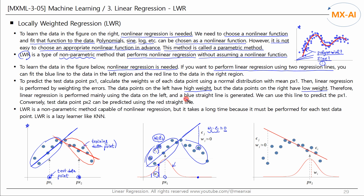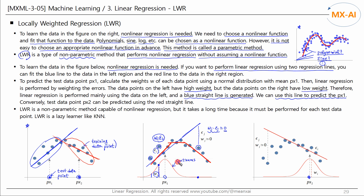This results in a blue regression line. We can use this blue line to predict the target value for px1. Conversely, the test data point px2 can be predicted by the red regression line. If we use three regression lines, the result would be like this. Since the normal distribution is a continuous function, a smooth curve like this is created as if an infinite number of regression lines are used. LWR is a nonparametric method capable of nonlinear regression, but it takes a long time to predict, because a linear regression must be performed for each test data point — a lazy learner like KNN.